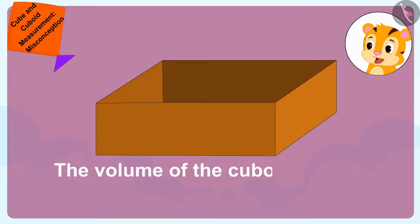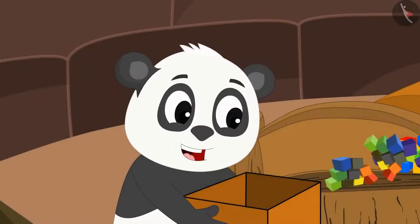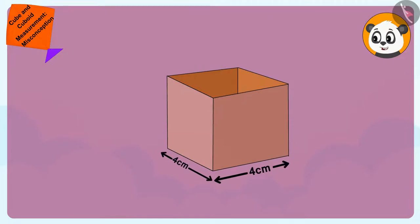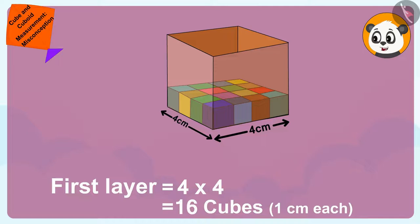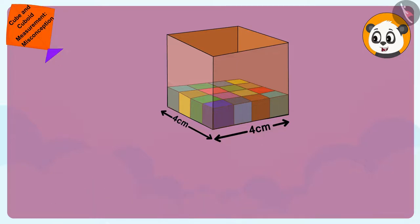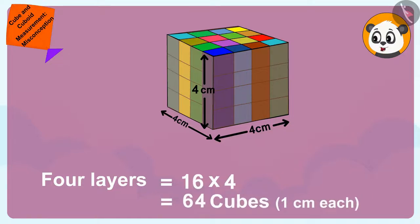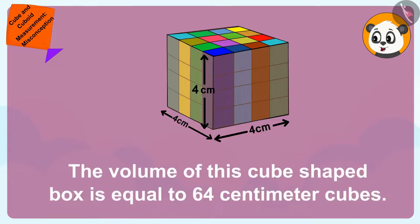In other words, the volume of the cuboid shaped box is equal to 64cm cubed. I will find the volume of this cube shaped box. Shere Khan, the sides of the cube shaped box are 4cm each. This means the first layer will have 4 times 4, 16 cubes of dimension 1cm each. And its height is 4cm, it means there will be 4 layers. We will be able to place 16 times 4, 64 cubes of dimension 1cm each in the cube shaped box. In other words, the volume of this cube shaped box is equal to 64cm cubed.